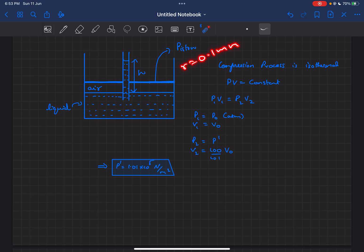Now the air is undergoing a compression process which is isothermal. So its volume is going to decrease and the pressure is going to increase inside the air column.